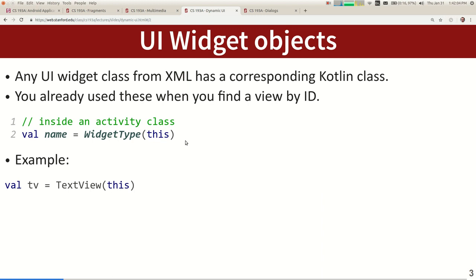You can generate widgets in Kotlin code if you want to. The way you do it is you construct an object of whatever widget type — Button, TextView, EditText, Spinner, ListView — all the different widget classes have Kotlin classes that represent them. You already interact with widgets in Kotlin when you find a view by ID or refer to them by their ID-based variables. But you can also make a new one from scratch. Just constructing a widget does not put it on the screen yet — you have to set some of its properties and tell Android where to put it.